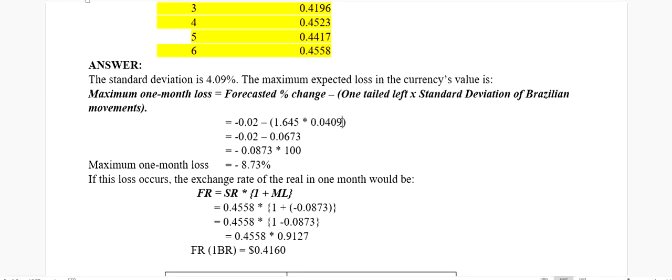We multiply 0.0409 with 1.64, we will get 0.0673. And then minus 0.02 minus 0.0673 we get minus 0.0873. These are basic mathematics, so you know that very easily. And then you multiply that to get your answer in percentage. So it is expected that there will be a maximum loss of 8.73% in the Brazilian Real value. You will have this much loss.